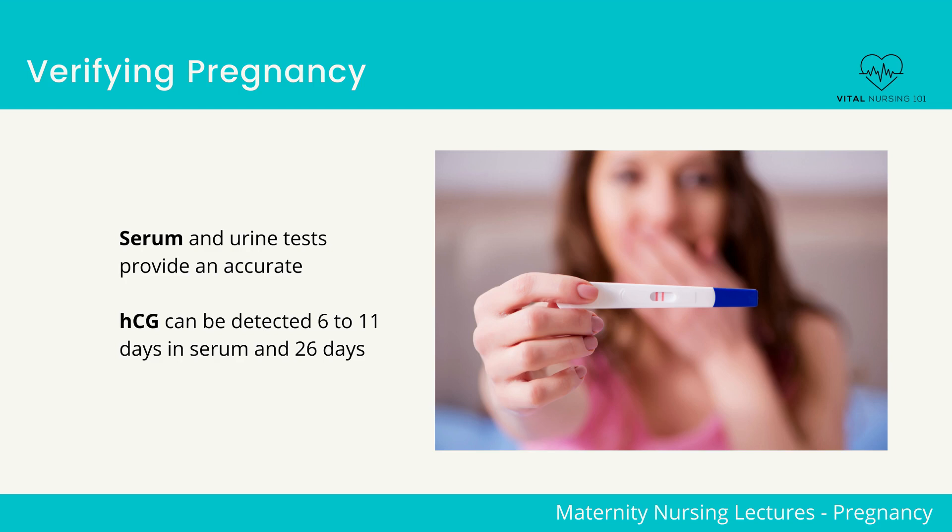Higher levels can indicate multifetal pregnancy, ectopic pregnancy, a hydatidiform mole — which is a gestational trophoblastic disease — or a genetic abnormality such as Down syndrome. Lower blood levels of HCG may suggest a miscarriage or ectopic pregnancy. Some medications such as anticonvulsants, diuretics, and tranquilizers can cause false positive or false negative pregnancy results.